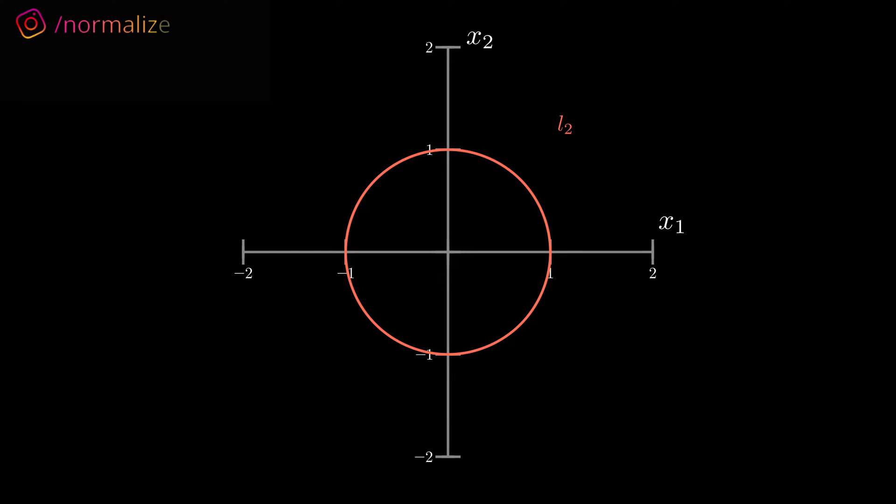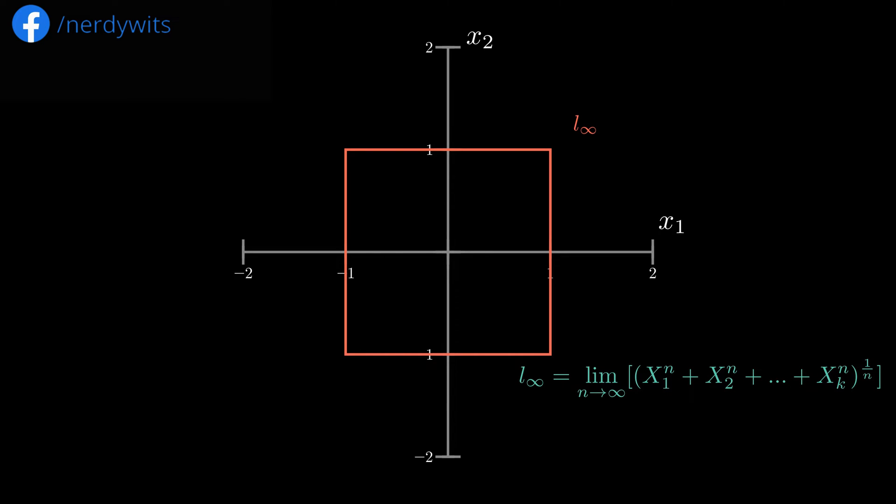Let's see what happens to the circle as we increase n. As we increase the order, the shape approaches a square. But wait, how did I even calculate the L infinity norm? Well, I just took the limit of the formula as n approaches infinity. It turns out that L infinity is just the maximum component of the vector.